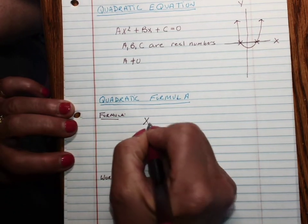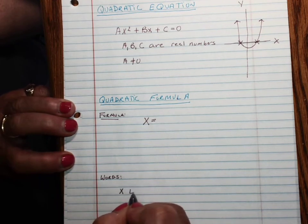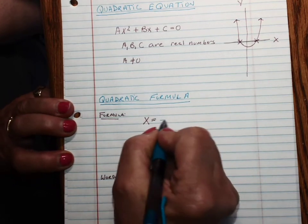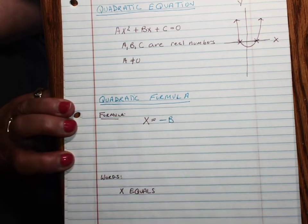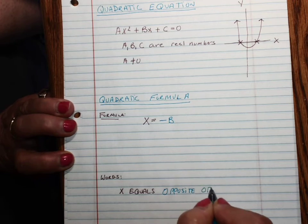The first thing is that we're solving for x. X equals the opposite of b.